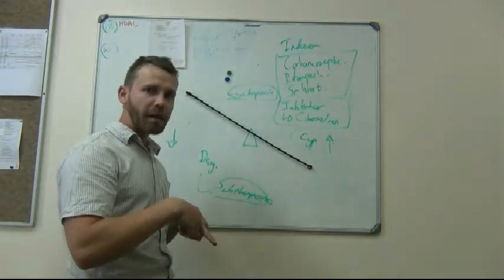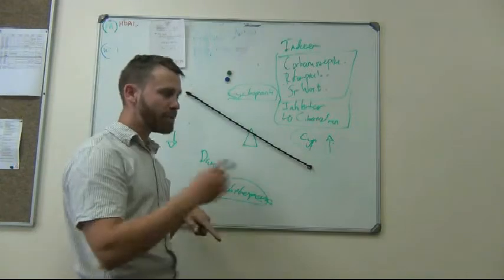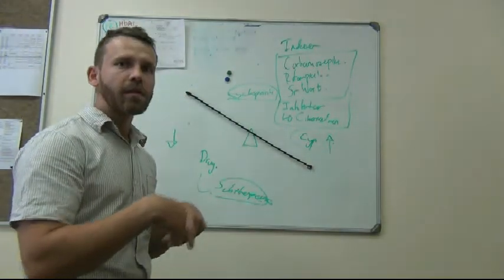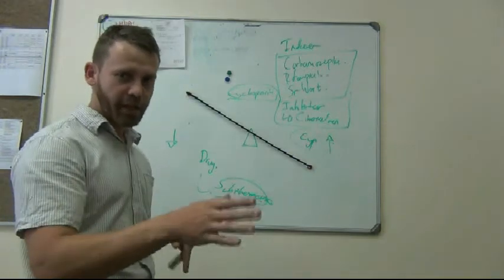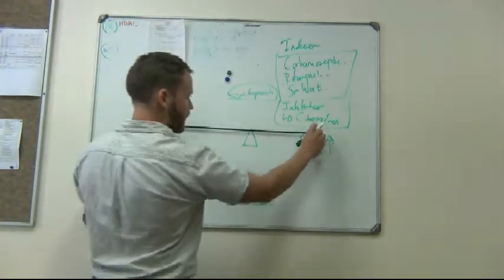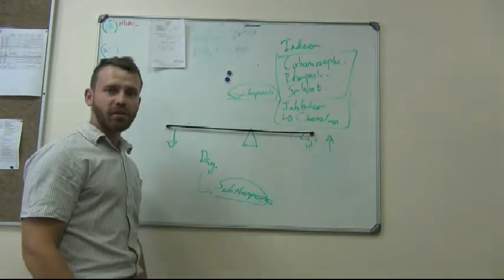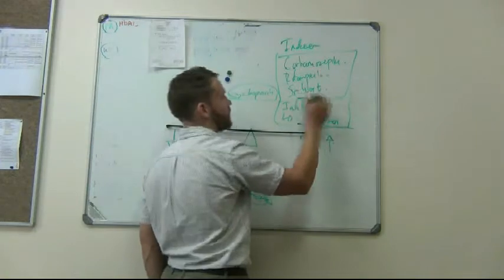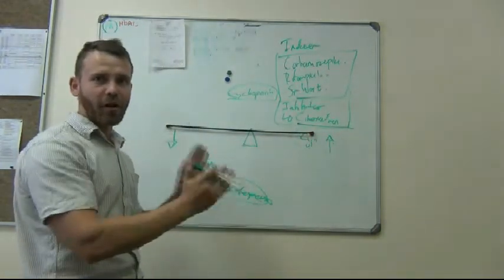If it was cyclosporine, cyclosporine is used for organ transplants. If you don't have enough cyclosporine, you won't be able to suppress your immune system. If you don't suppress your immune system well enough, you get immune system reactivation and organ rejection.